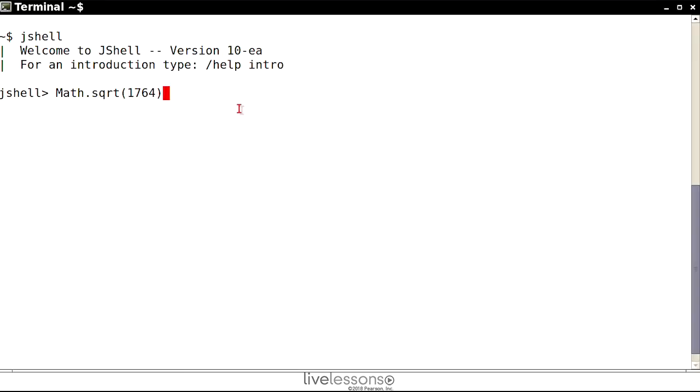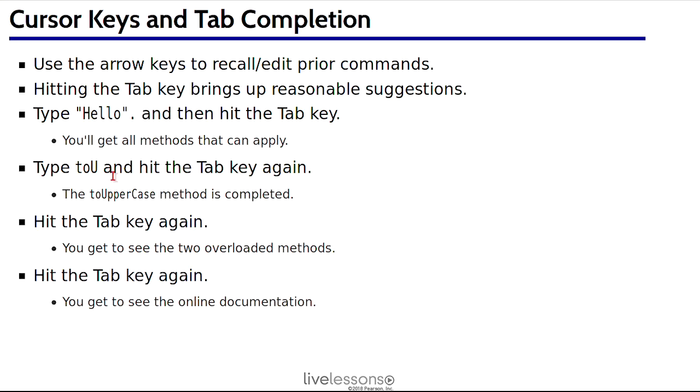For example, to answer the age old question, what is the square root of 1764? You just paste it in, and it's 42. Of course, the answer to everything. Now we can use this result, which is stored in a variable called $1. Do $1 plus 1. And that's 43, stored now in a variable called $2. So these variables increment, and you can use them in your calculations.